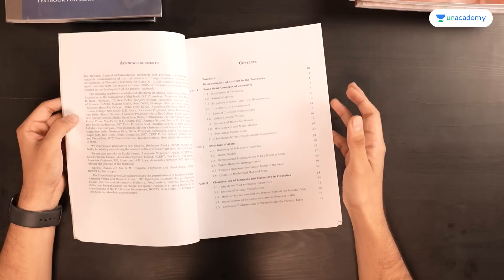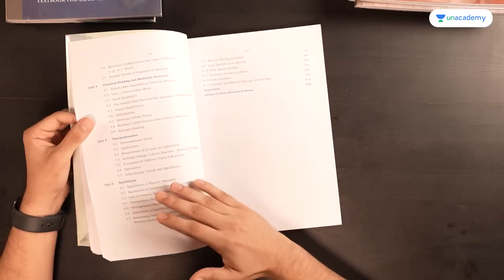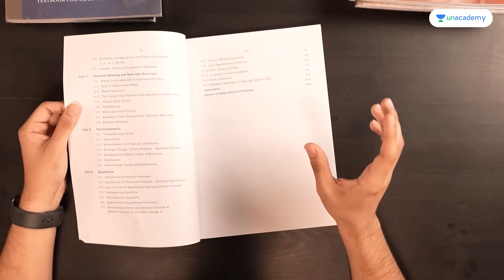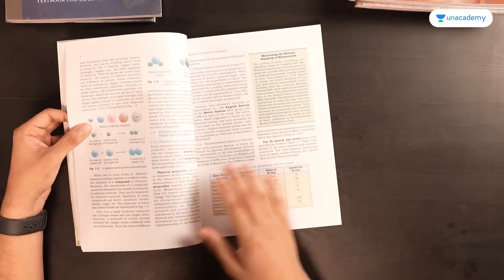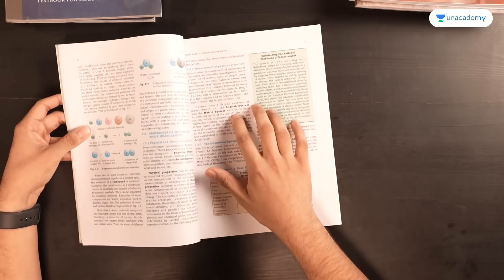You have to segregate the chapters which are concept based, which are numerical based and which are actually theory based. Once you do that, things are gonna get simple. As I said, like some basic concept of Chemistry, take a small notebook. This is what I did and write the important theory points which are present.